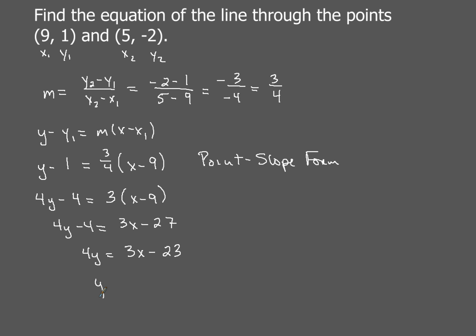When I divide everything by 4, I'll get 3x over 4 minus and then 23 over 4. Nothing reduces. So if I wanted that equation in slope intercept form, that's what I would have. So that's if you were going to work with point slope form to start with.